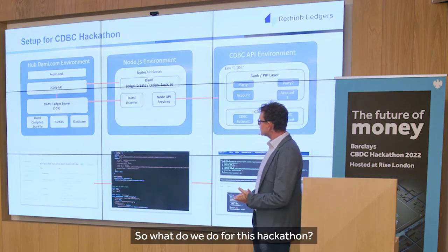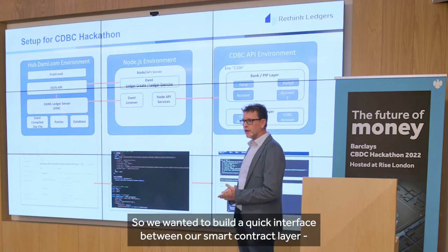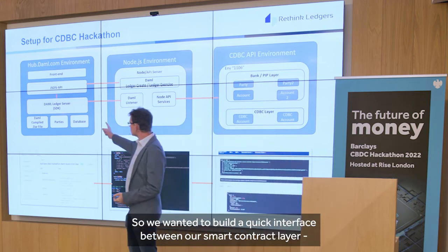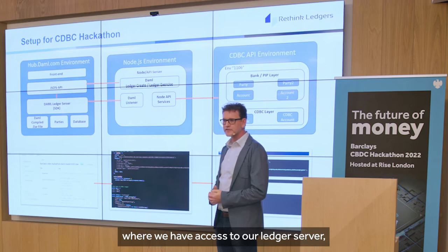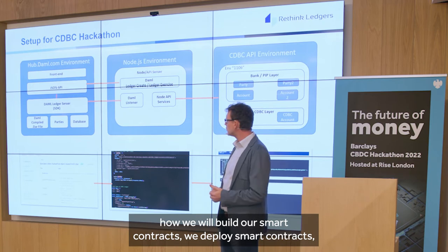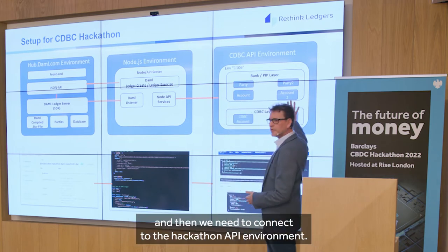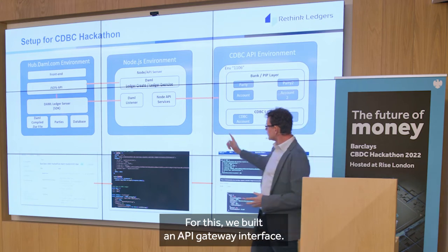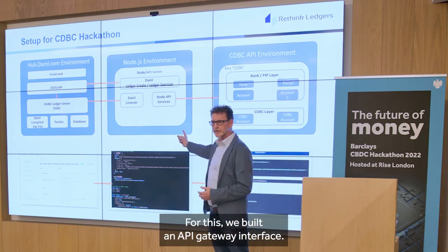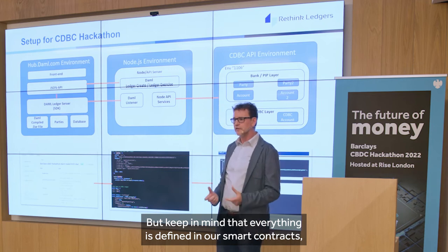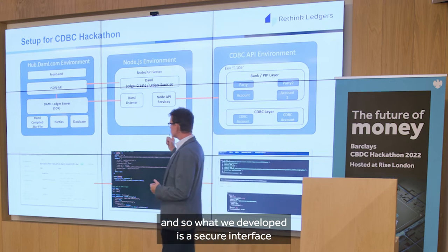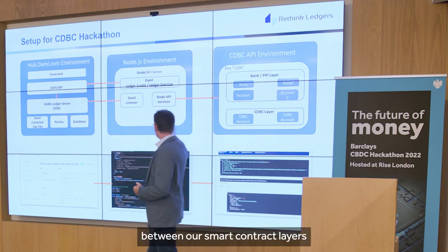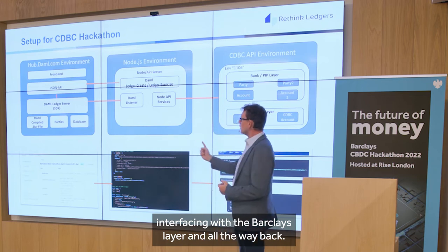So what did we do for this hackathon? We wanted to build a quick interface between our smart contract layer, which can be hosted on an open platform called DamlHub, where we have access to our ledger server, build our smart contracts, deploy our smart contracts, and then connect to the hackathon API environment. For this, we built an API gateway interface — everything is defined in our smart contracts — creating a secure interface between our smart contract layer and the API layer, and all the way back.